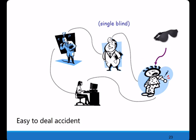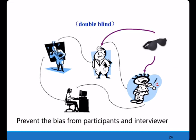In a single-blind trial, only the patients are unaware of their assigned treatment. This is particularly important when the outcome is measured subjectively, such as in trials investigating pain relief. For example, if a patient knows they are receiving a new drug and is suspicious of it, they might be more likely to report worse outcomes or withdraw from the trial. Double-blinding prevents bias from both participants and evaluators, since the evaluator's knowledge of the treatment assigned can also significantly distort results. Double-blind is the most commonly used design in clinical trials.